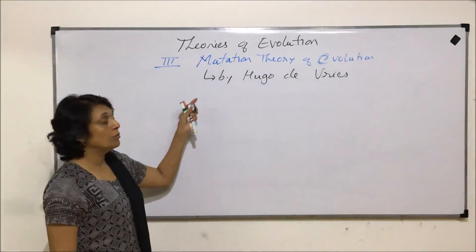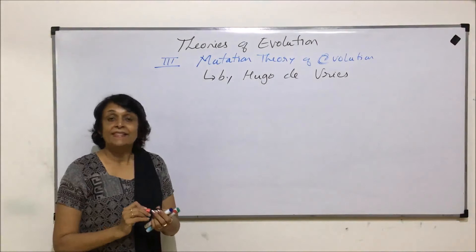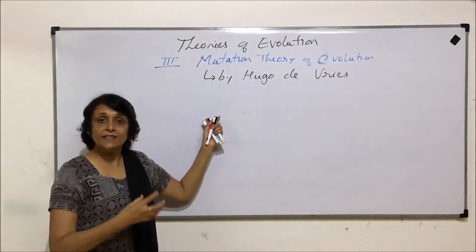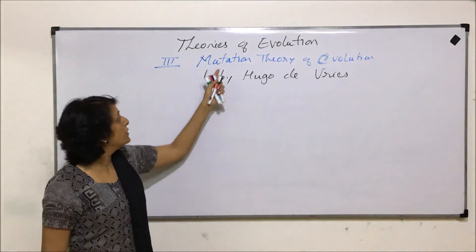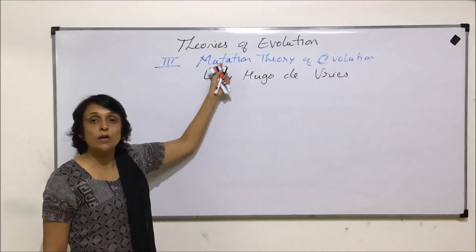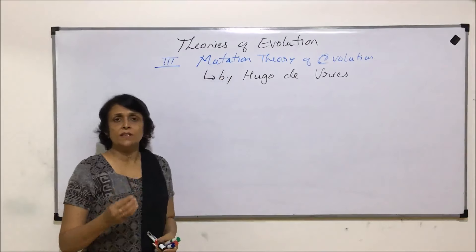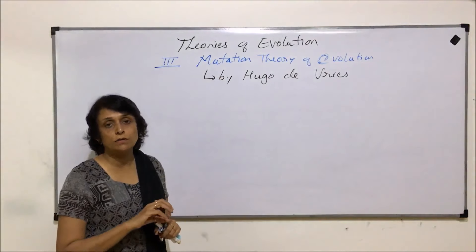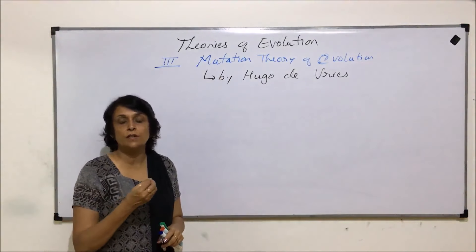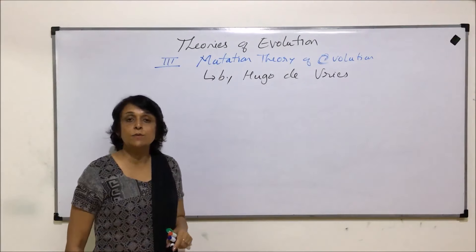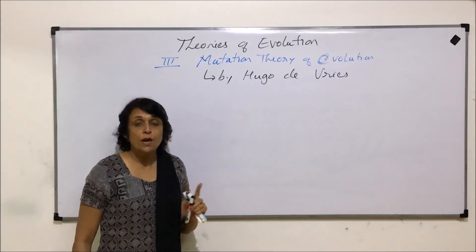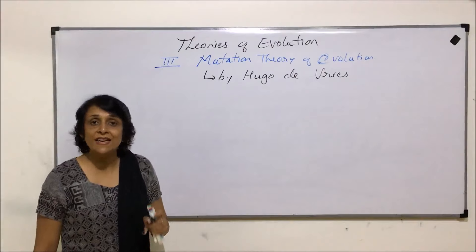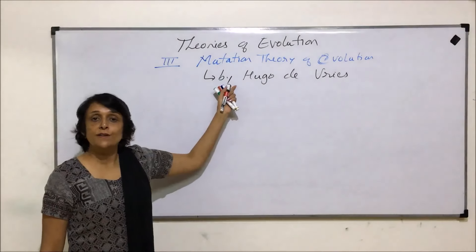The Mutation Theory says that whatever changes take place are due to sudden changes in the genetic makeup, which Hugo de Vries called 'mutation.' A similar thing was observed by Darwin also — he called those sudden variations 'sports,' but he did not pay much attention to them because their number was very small.